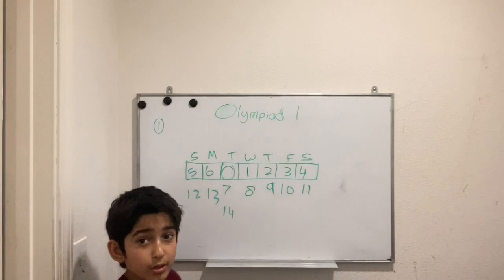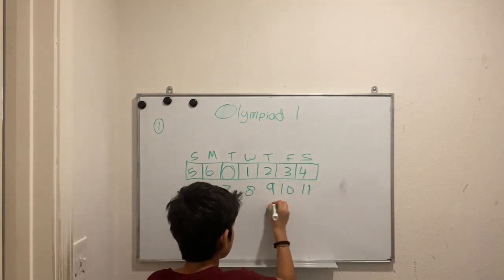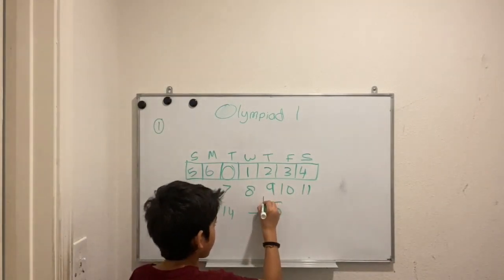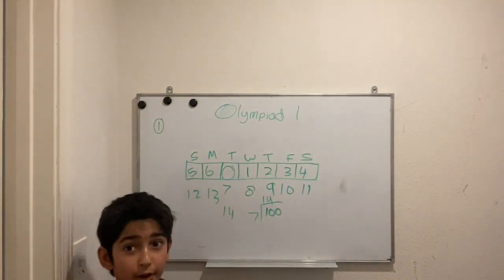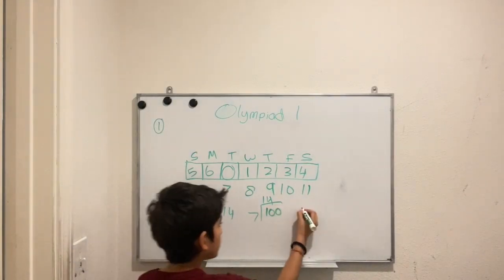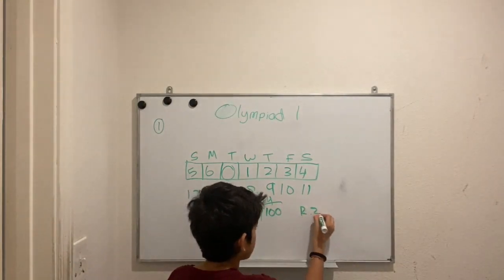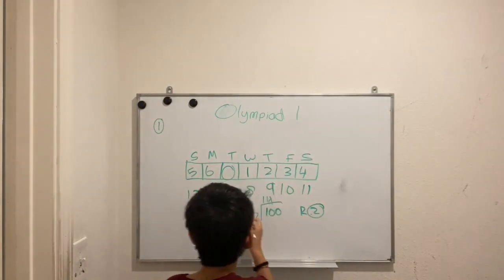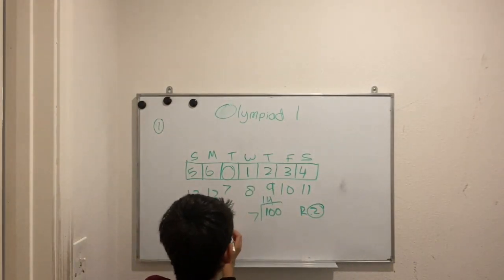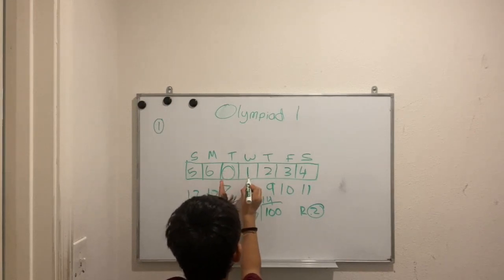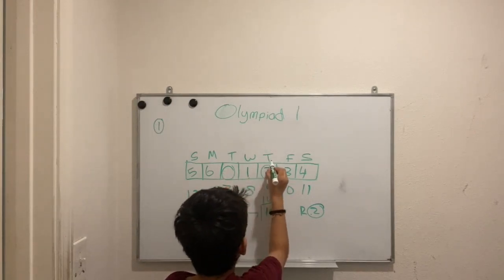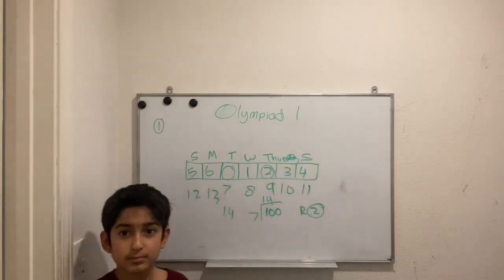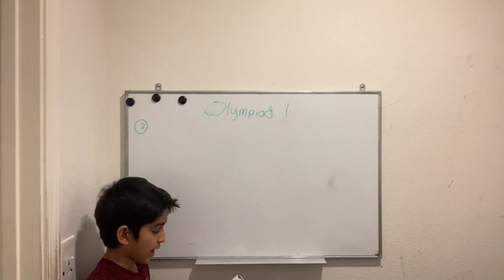We're looking at 100 days from now, so we divide 100 by 7 and get 14 with a remainder of 2. The remainder is 2, so we move two more days from Tuesday: one, two — so Thursday should be the answer.